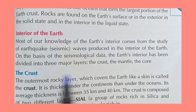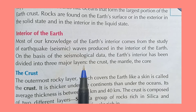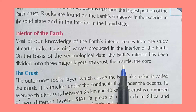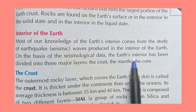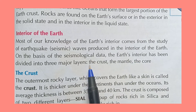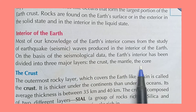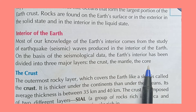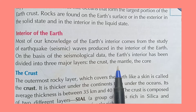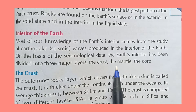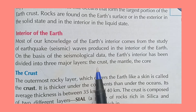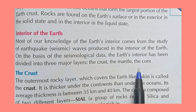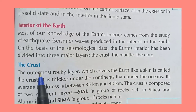On the basis of seismological data, the earth's interior has been divided into three major layers: the crust, the mantle, and the core. Just as an onion has different layers, similarly the earth also has different layers, and we divide them into three parts: the crust, the mantle, and the core.